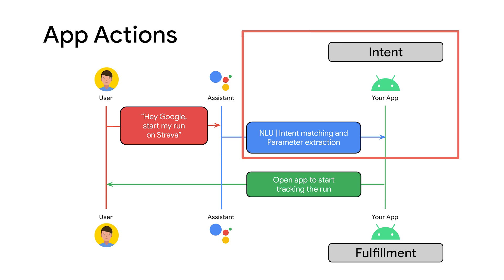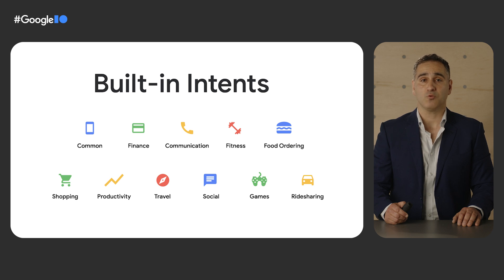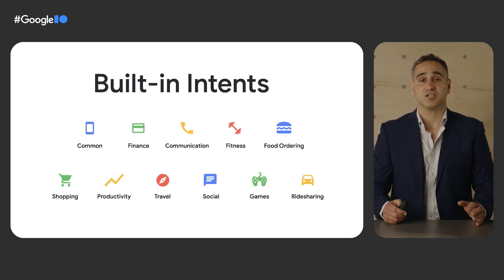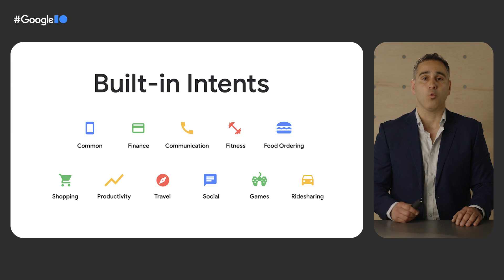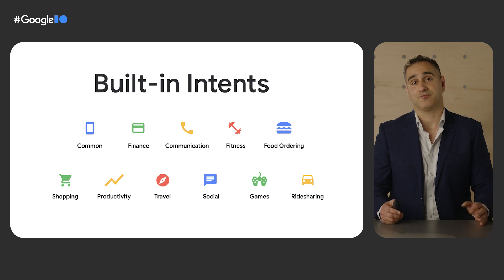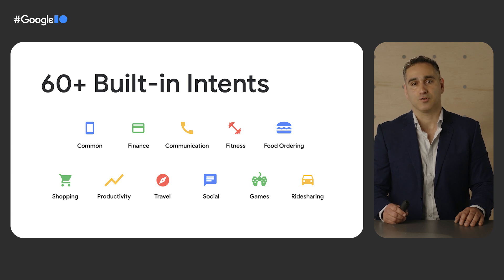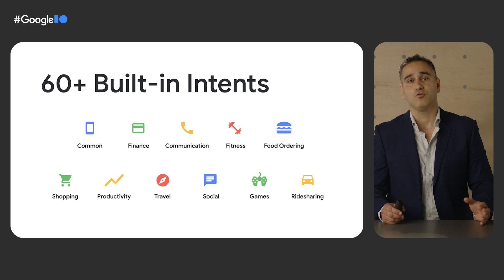The first step is to let Google know which user intents or capabilities your app can fulfill. To do this, you either leverage one of Google's built-in intents — BII for short — or create your own custom intents. Built-in intents model common ways users express tasks they're trying to do or information they seek, such as ordering a meal, booking a ride, or checking an account balance. The great thing about BIIs is that Google builds and maintains the language models required to understand a wide variety of terms relating to that particular intent. We now support 66 built-in intents across many verticals such as fitness, finance, food ordering, and more.